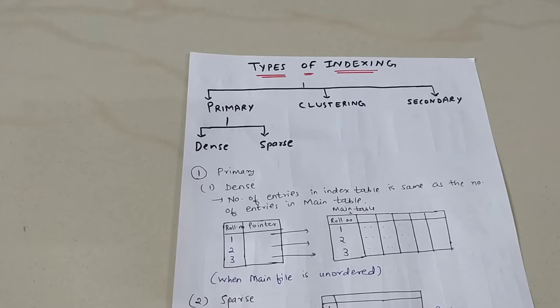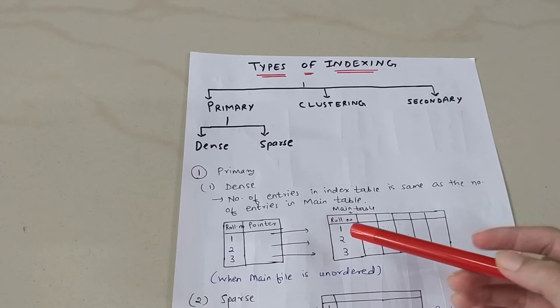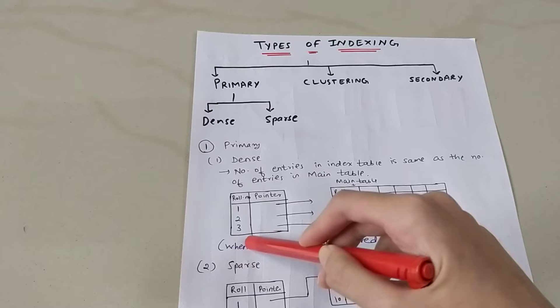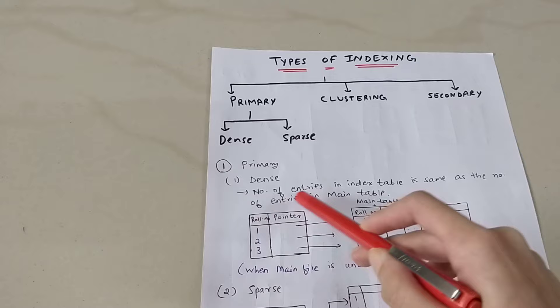Dense indexing means the number of entries in the index table is the same as the number of entries in the main table. We consider two tables: the index table and the main table. If your main table has three rows, your index table will also have three rows. In practice, index tables are used for very large tables, but as an example — if the main table has many columns with many records, your index table will have only two columns: roll number and pointer.